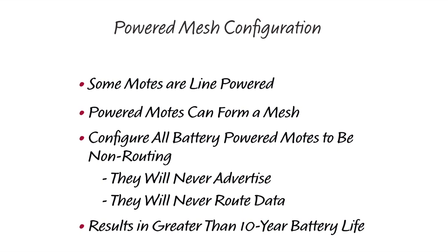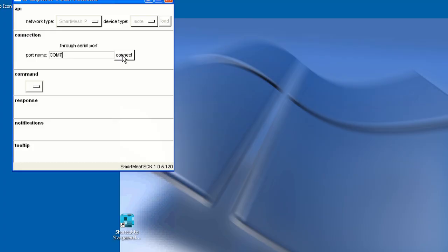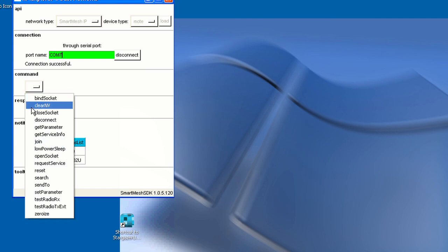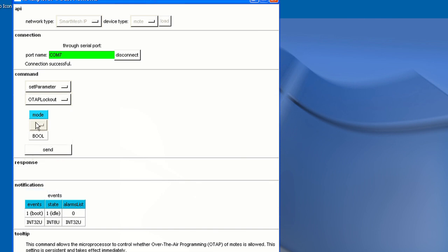What this means is that when the mote joins, it will inform the network that it cannot afford to be a parent in the mesh. The manager will make sure those motes never advertise and will never route data from other motes. They will always be leaf nodes. This guarantees that those motes will have the lowest possible power consumption and that all these non-routing motes will have similar current consumption. I can make this configuration setting on a mote through API Explorer. I use the set parameter command to set routing mode to true. You can watch these motes join and see that they are never parents in the mesh.